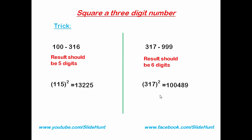If you know this trick, without calculation you can say the answer should be 5 digits or 6 digits. Another benefit is: if you square any number from 100 to 316 and you get a 6-digit result, you can understand it is a wrong answer and that you made some mistake. This was about how to square a 3-digit number.